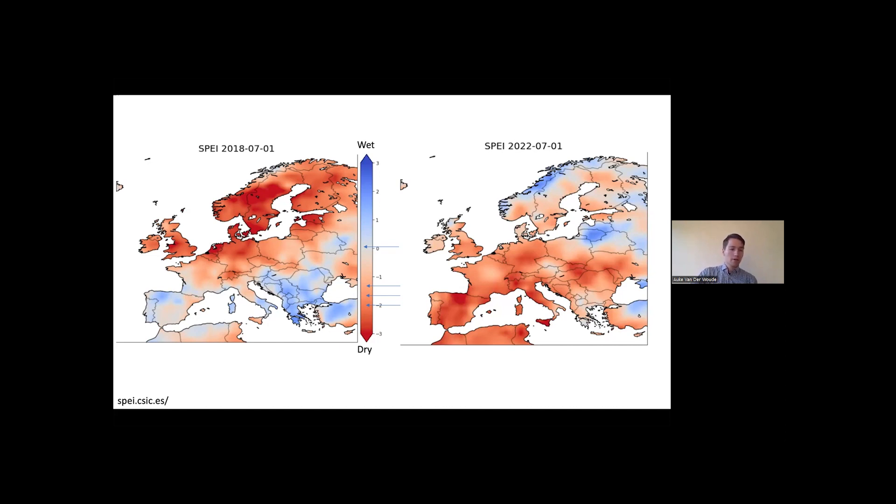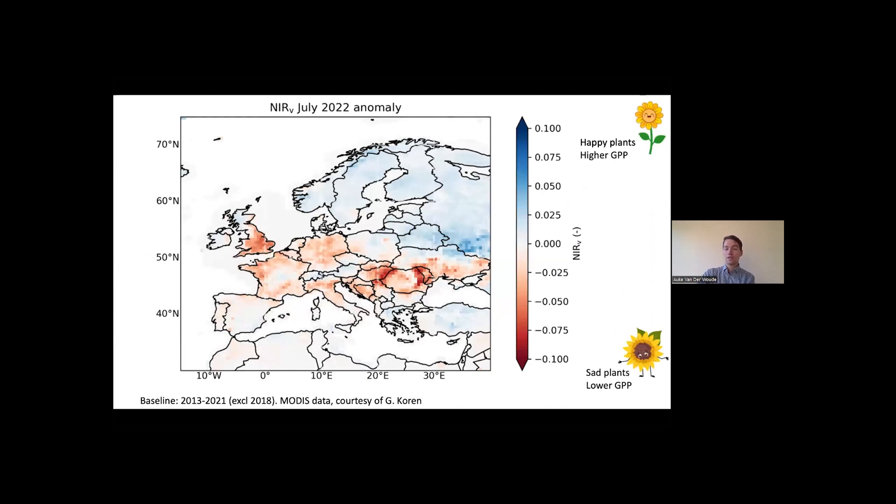And we can get a very nice overview from the NIR-V, which is the near-infrared reflectance of vegetation. And this is a measure of how open the plants are, how much their leaves are faced towards the sun, which is, in turn, a measure for how much photosynthesis they can do. And this is an anomaly, so this is how much the NIR-V differed from normal years. In the blue, in the positive, there's the sunflower again. This means happy plants with higher NIR-V than normal, so more open leaves, more faced towards the sun.